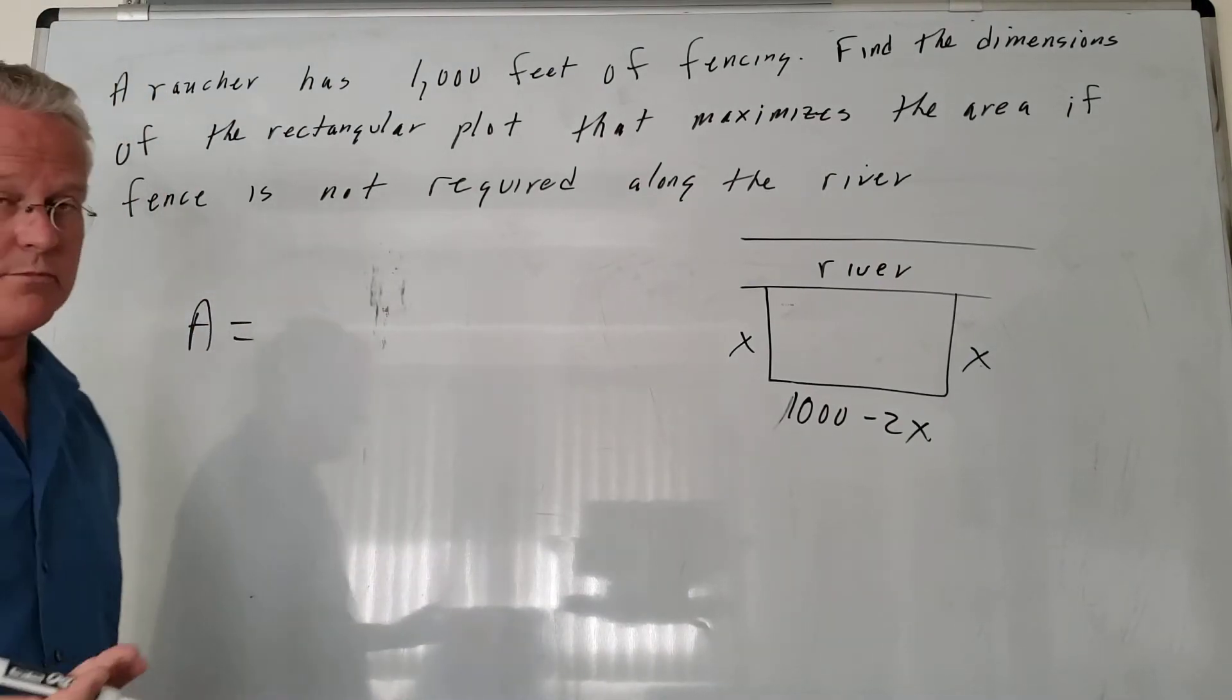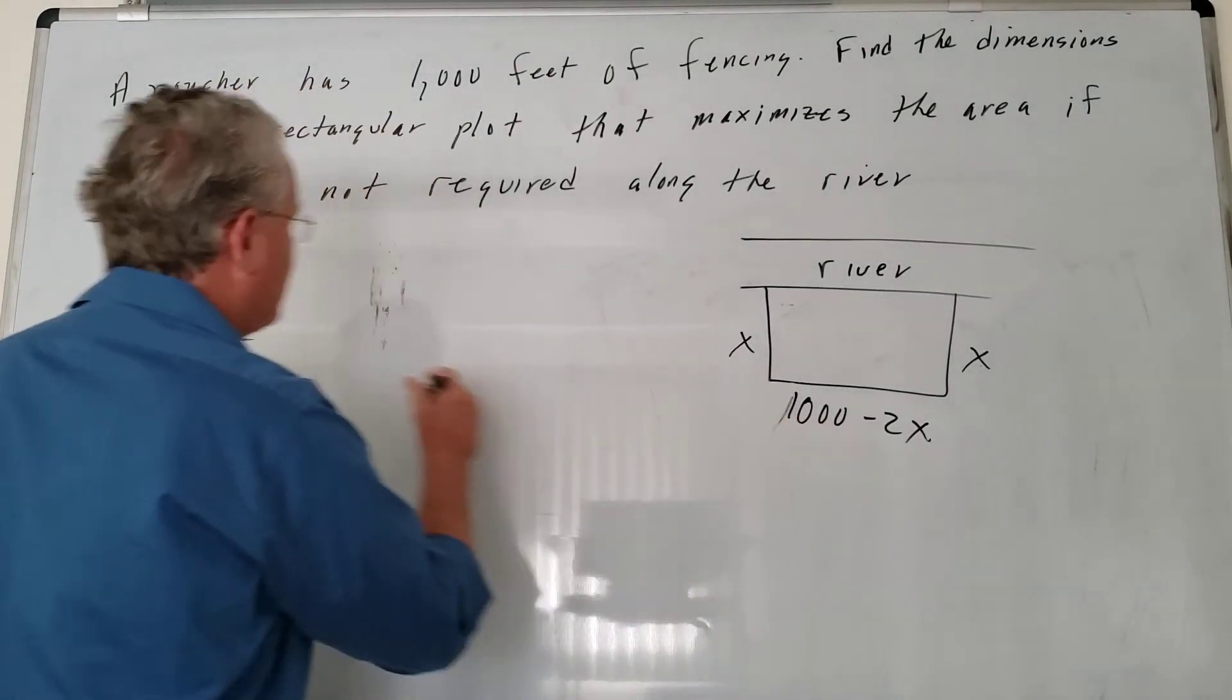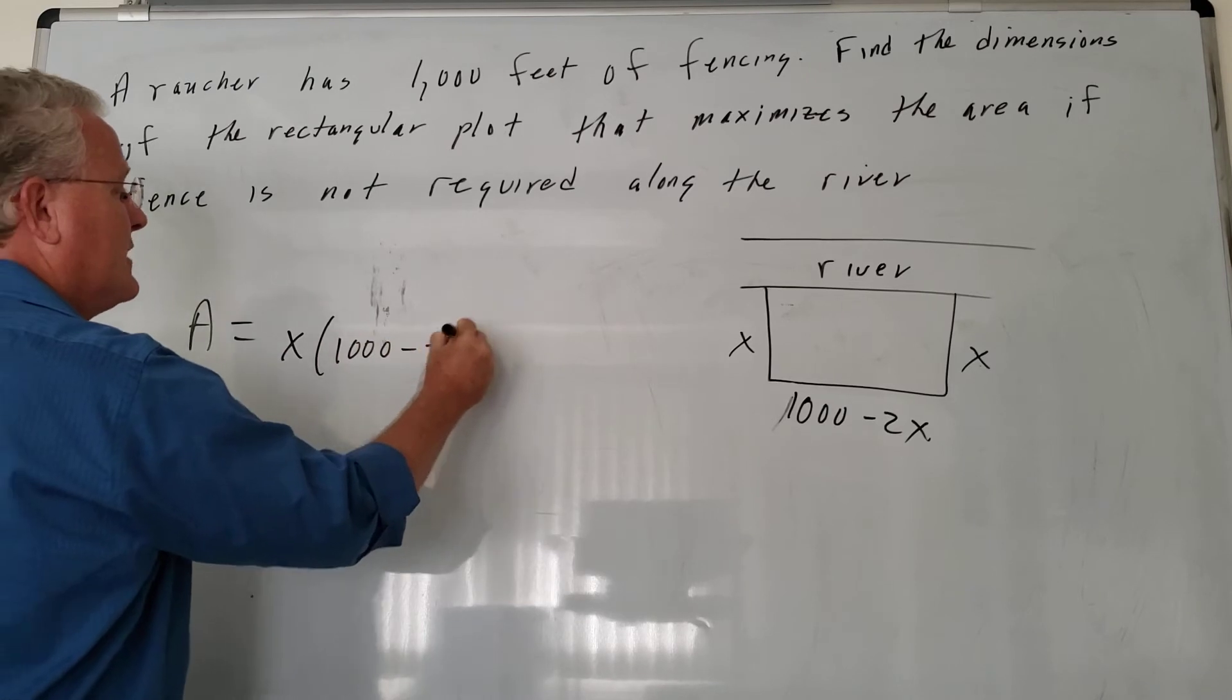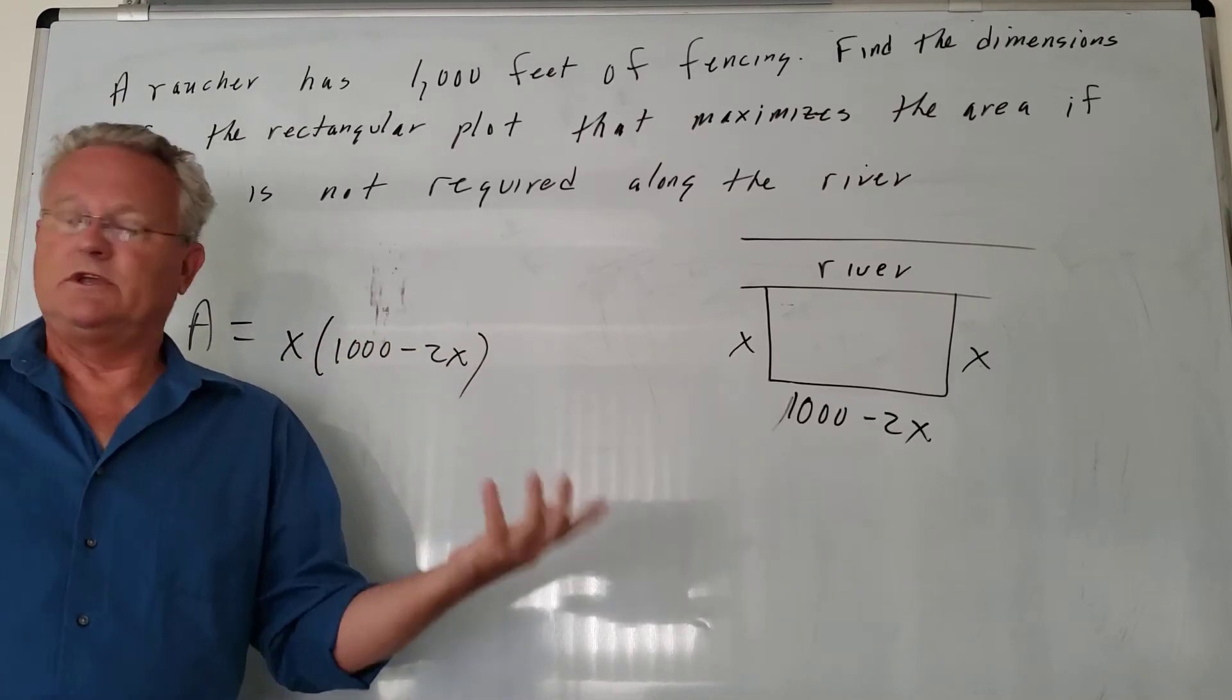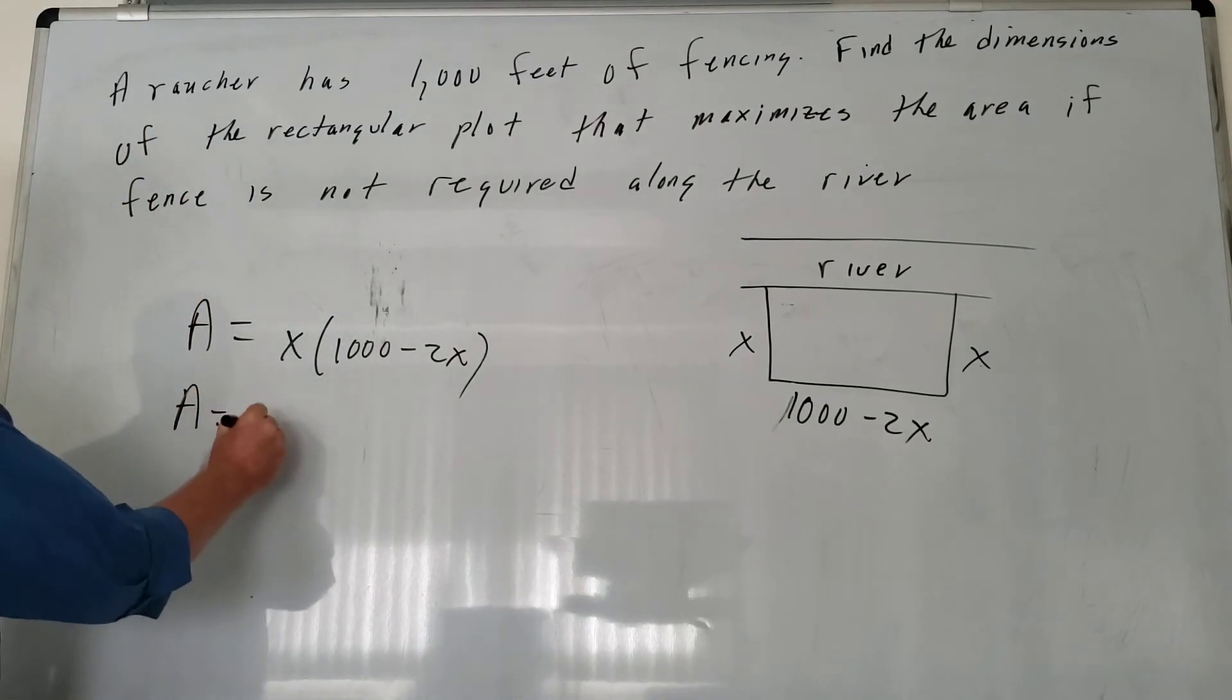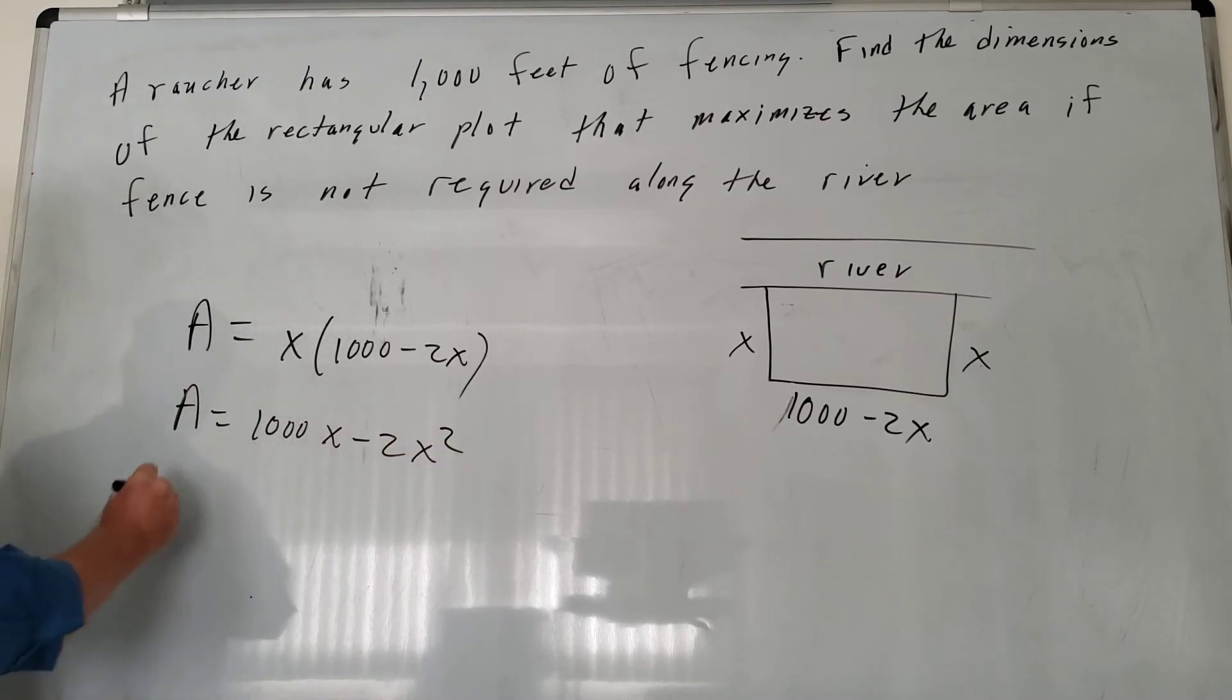We need a formula for area, and then the derivative. The area is length times width, so we have X times (1,000 minus 2X). This is an equation in one variable, so we can take the derivative and solve. Distributing, we get 1,000X minus 2X².